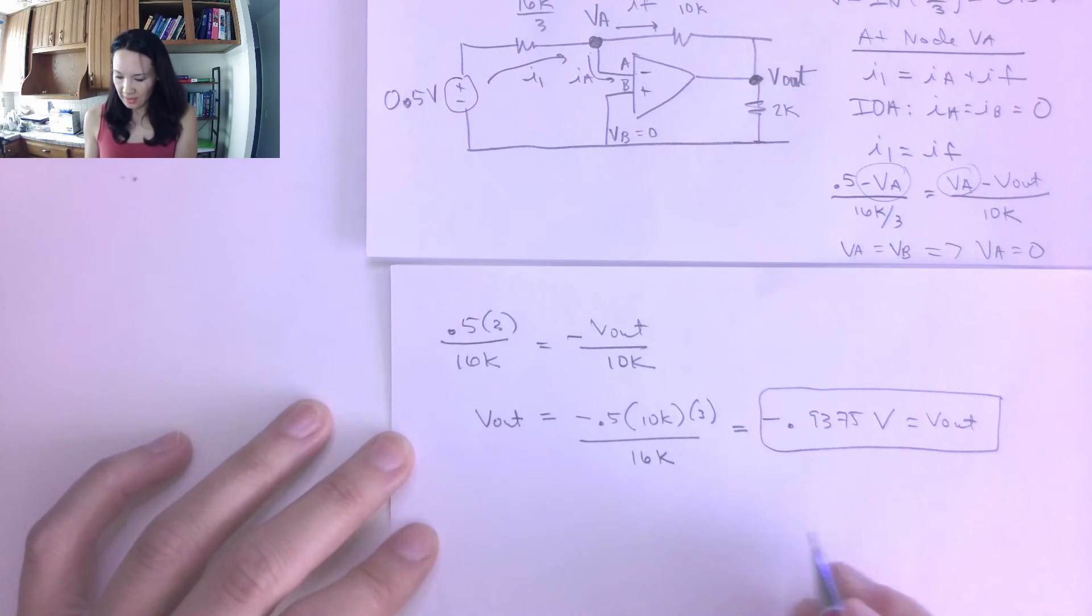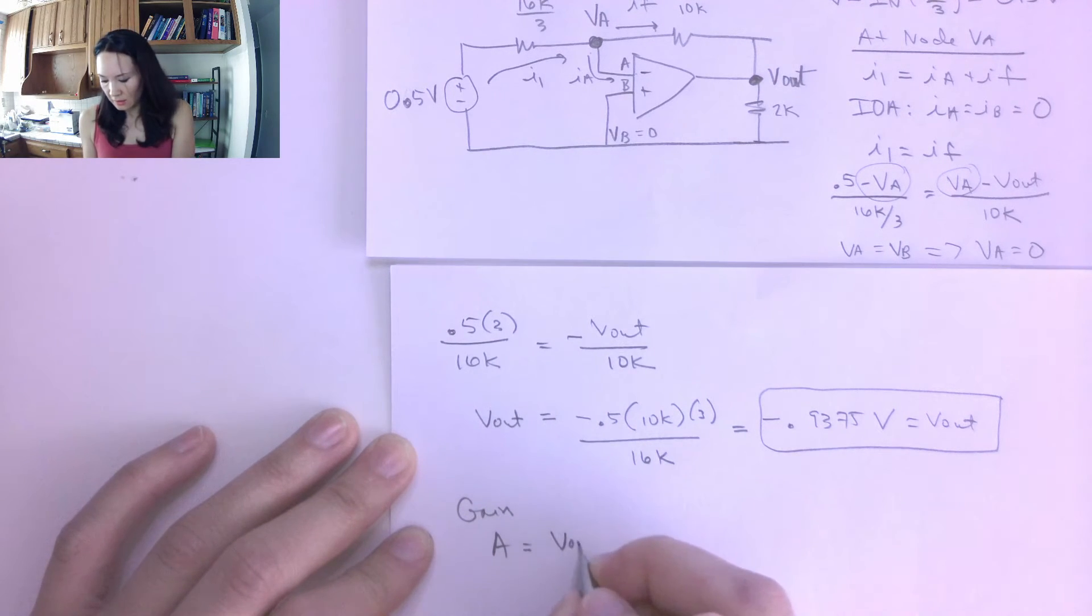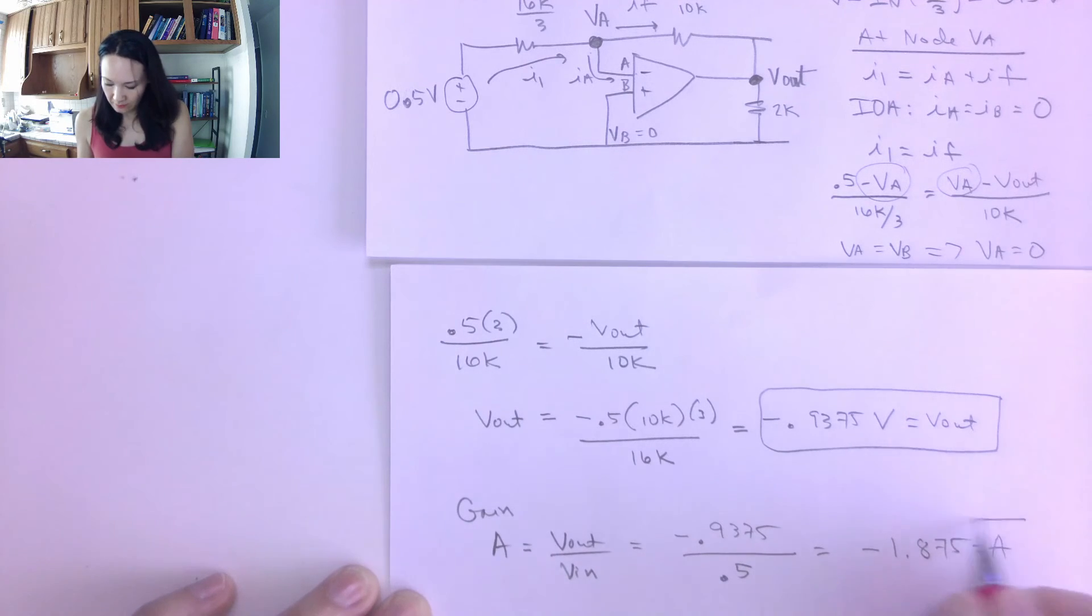So remember, the definition of gain is going to be Vout over Vin. So how much did our signal get amplified? If we started with Vin and we ended up with Vout, this ratio is going to give us what our multiplier was that was done by the op amp. So our Vout, we just computed, was negative 0.9375 volts. Our Vin, in this case, was 0.5, so this is going to be negative 1.875, and this is equal to our gain.